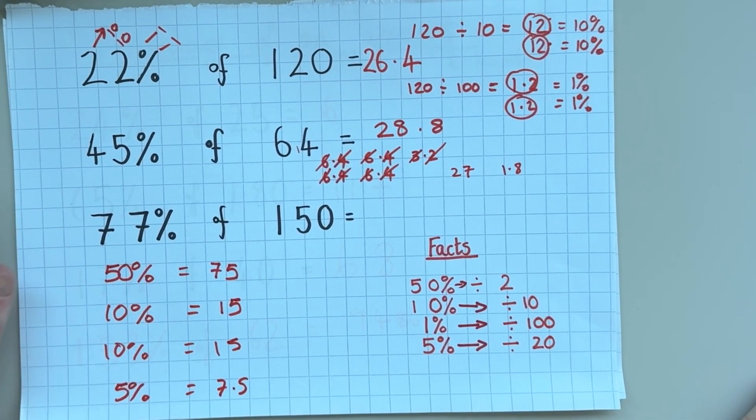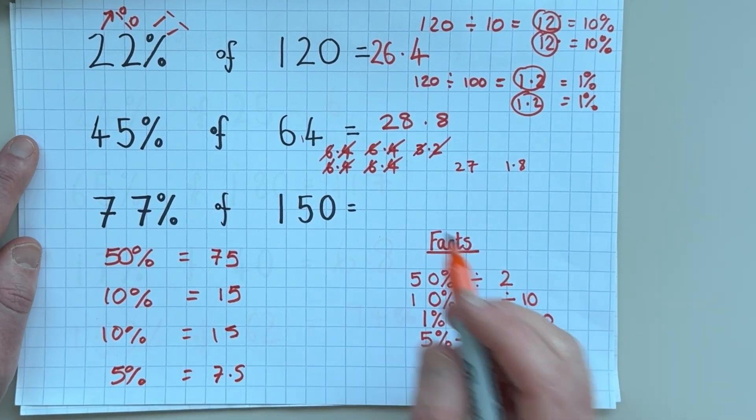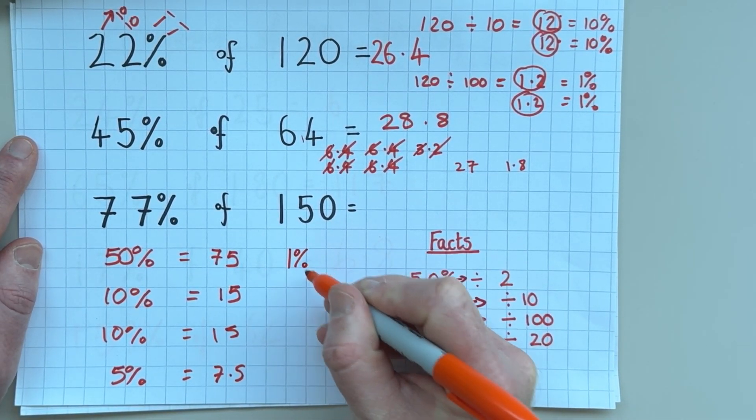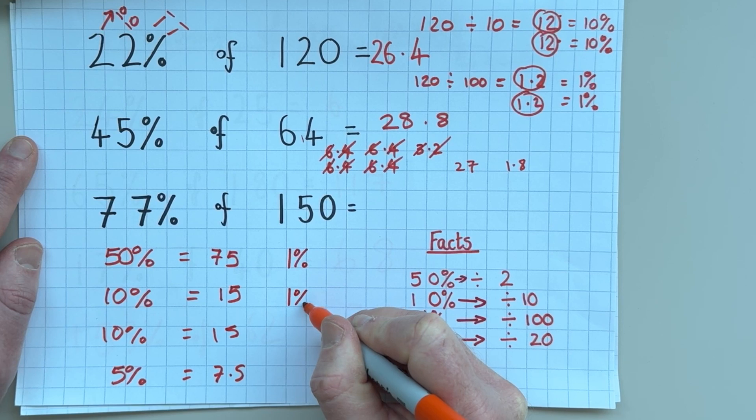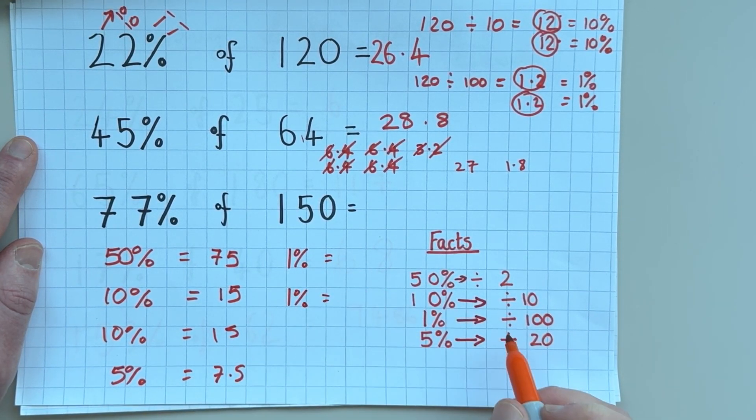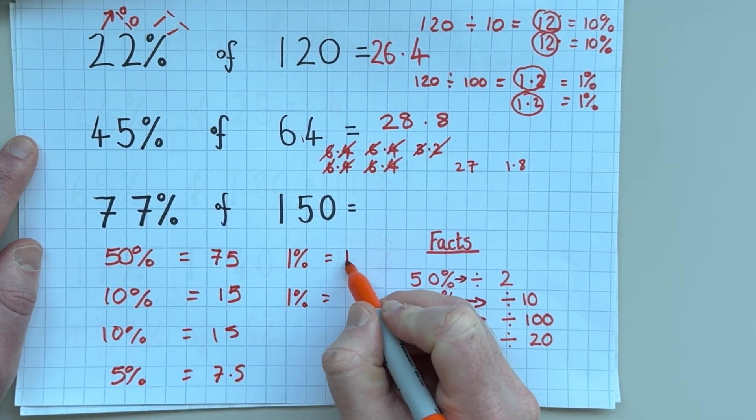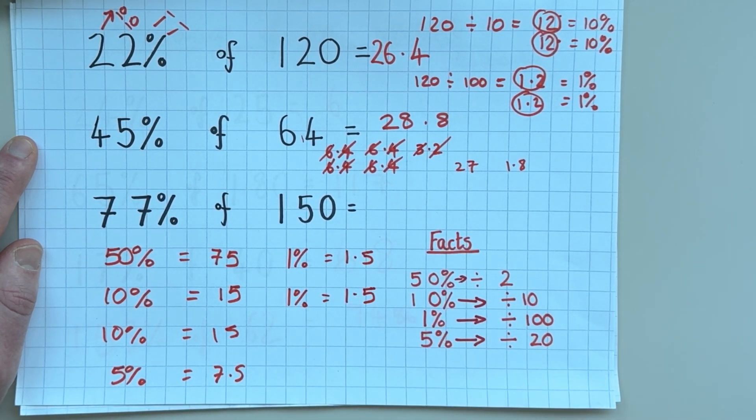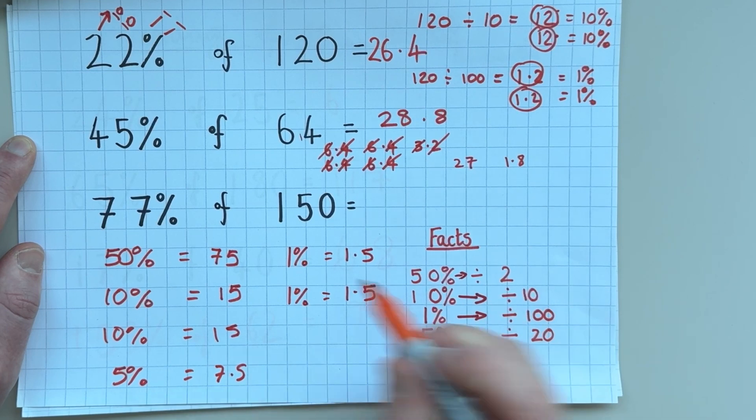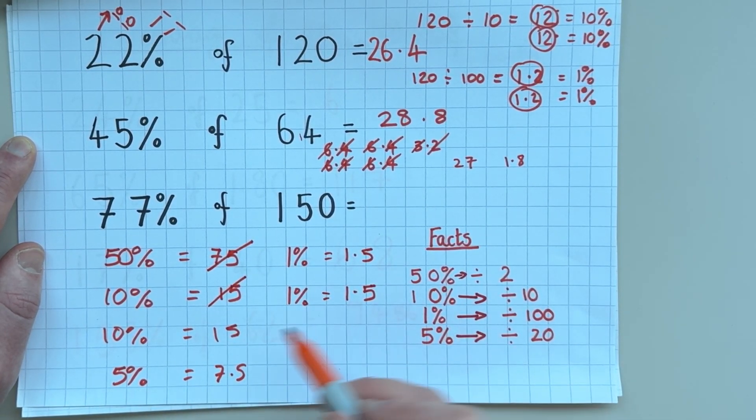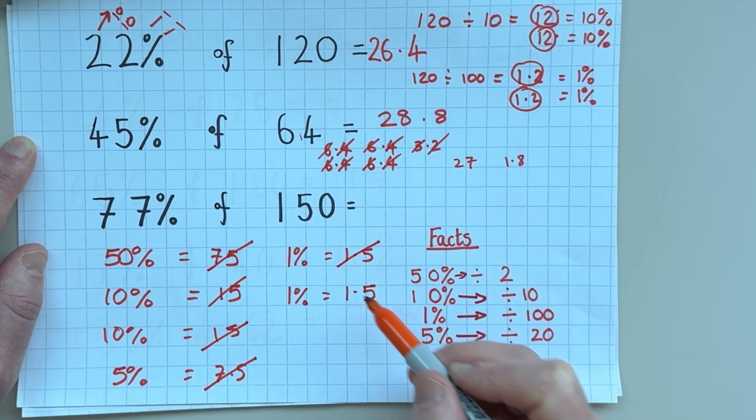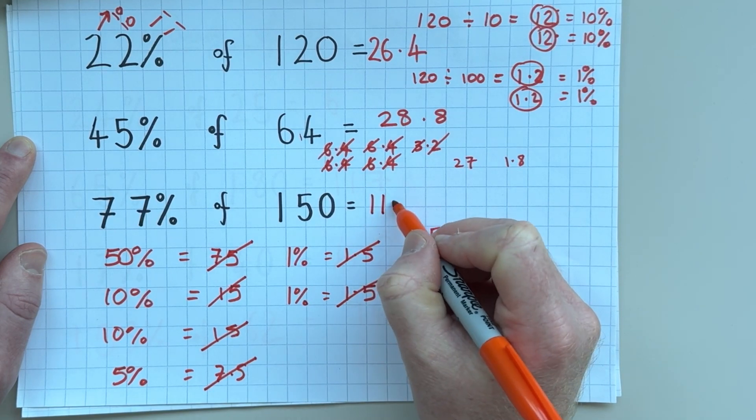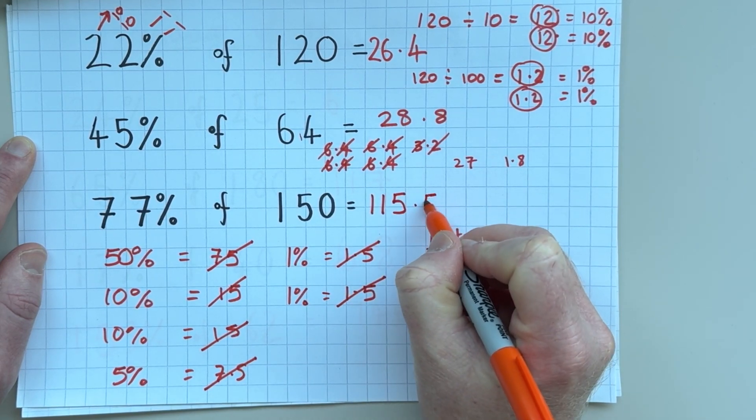So now I'm up to 75%. And we need 1%. So 1% of 150 is 1.5 because I divided it by 100. All I have to do now is add it up. So 75 and 15, 90, 105, 112.5, 114, 115.5.